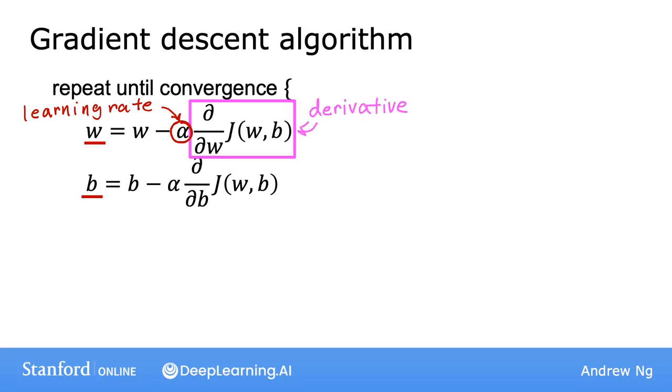And by convention in math, this d is written with this funny font here. In case anyone watching this has a PhD in math or is an expert in multivariate calculus, they may be wondering, that's not the derivative, that's the partial derivative. And yes, they'd be right. But for the purposes of implementing a machine learning algorithm, I'm just going to call it derivative. Don't worry about these little distinctions.